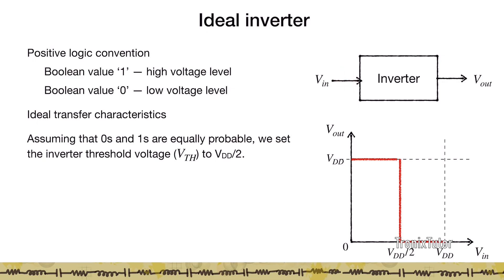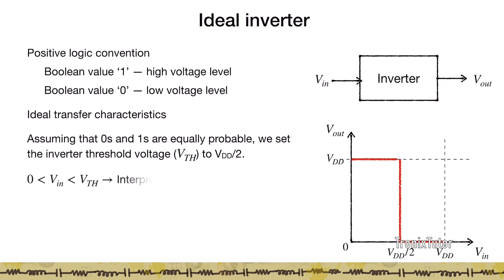We want to ensure that we map the Boolean levels such that the bottom half of the input is mapped to a Boolean 0 and the top half of the input is mapped to a Boolean 1. Therefore, the ideal transfer characteristics would show a sharp transition in the output voltage at Vdd/2. This indicates that at any input voltage below Vdd/2, the output is going to be a high Vdd, giving the regenerative property of the gate.